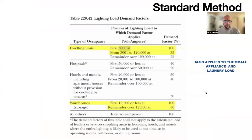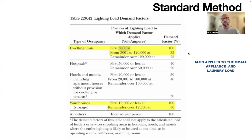Looking at Table 220.42, you'll see a demand factor we have to apply. For the first 3,000 VA we apply 100 percent. After that, from 3,001 to 120,000 VA, we apply a 35 percent demand factor — that's a multiplier. What this is telling you is that for a large house, they're betting you won't be using all the electric appliances and receptacles at once, so they knock it down and apply only 35 percent on that portion.